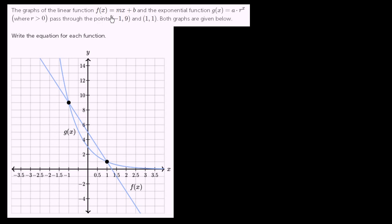The graphs of the linear function f(x) = mx + b and the exponential function g(x) = a·r^x (where r > 0) pass through the points (-1, 9), so this is (-1, 9) right over here, and (1, 1). Both graphs are given below.